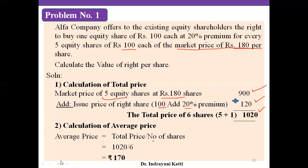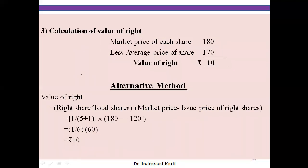Step 3 — calculation of value of right per share. The value of right is the difference between the market price and the average price. Market price given in the problem is Rs.180; average price we have calculated is Rs.170. The difference is the value of right: Rs.10.